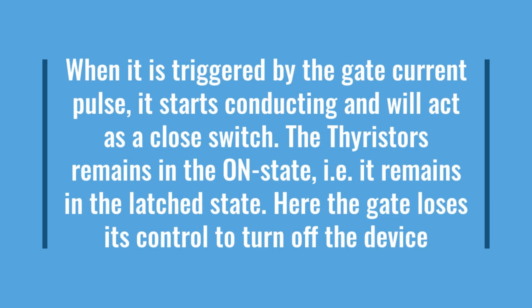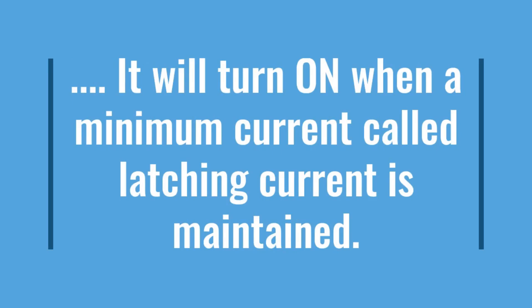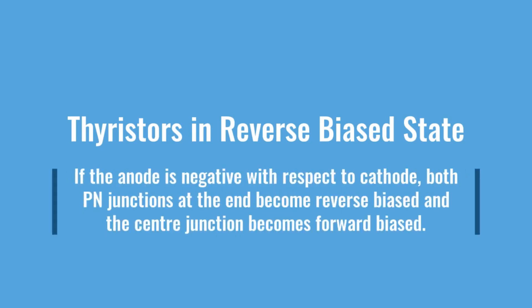Once latched, the gate loses its control to turn off the device. When a forward voltage is applied, a leakage current starts to flow through the blocking middle junction. When voltage exceeds the forward breakover voltage — the critical limit — the blocking middle junction breaks down and the thyristor reaches the on state. When gate current is increased, it reduces the blocking area and so the forward breakover voltage is reduced. The thyristor will turn on when a minimum current called the latching current is maintained.